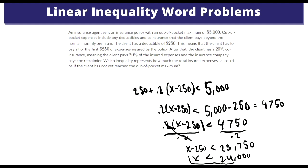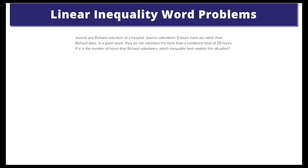And that would leave us with X is less than $24,000. So X must be less than $24,000, which would reach the out-of-pocket maximum. So that's the answer to that one. That was a little bit more of a tricky one, but the next one is easier.